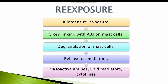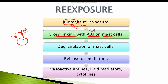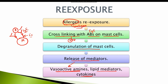Once there is re-exposure of the allergen, the antigen cross-links with the IgE antibodies on the mast cells. These are the mast cells with FC receptors and IgE antibodies attached. This antigen cross-linking activates signal transduction from FC receptors to the mast cell cytoplasm, resulting in degranulation of the mast cells. This degranulation results in the release of certain mediators which include vasoactive amines, lipid mediators, and cytokines, resulting in the allergic reaction known as type 1 hypersensitivity reaction.